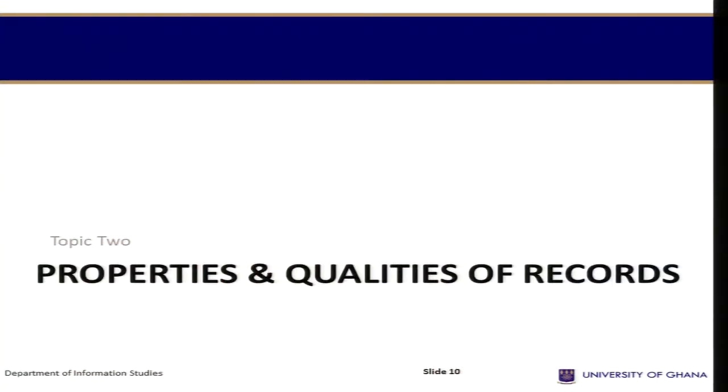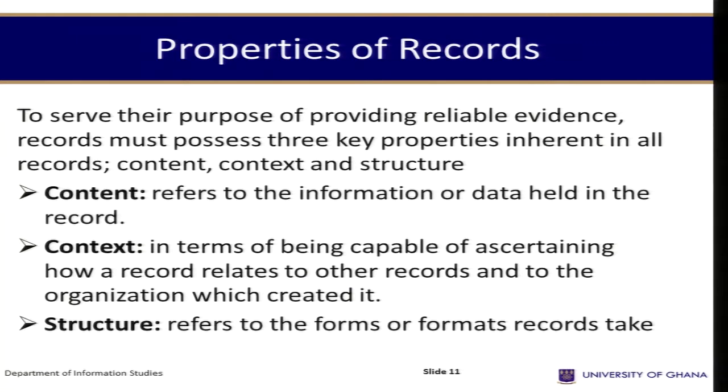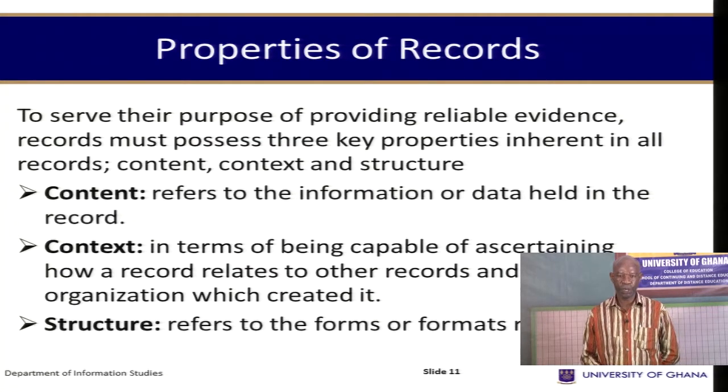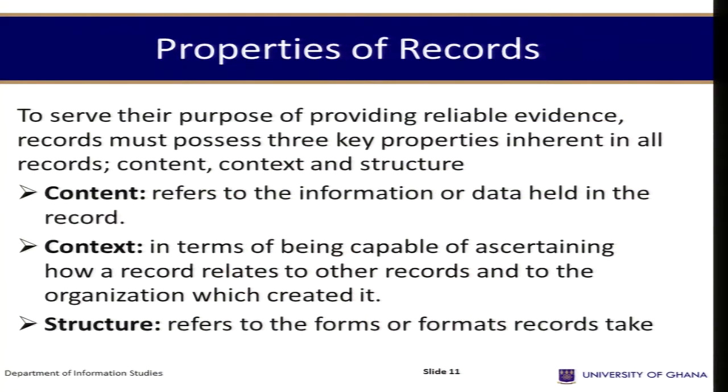Moving on to properties and qualities of records: to serve the purpose of providing reliable evidence, records must possess three key properties. First, content refers to the information or data held in the record. Second, context refers to being capable of ascertaining how a record relates to other records and to the organization which created it — there should be a relationship with other records generated. Third, structure refers to the form or format records take.